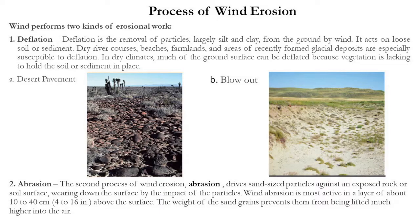Arid regions are also characterized by sandy soil. Sandy soil has relatively large particles and they are very loose, so they are very easily blown away by the winds. Therefore, aeolian landforms are more common in arid regions. This process of deflation — this blowing away of loose particles — causes two types of landscape: one is desert pavement and another is blowout.